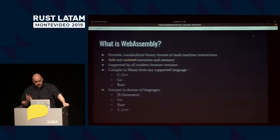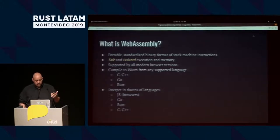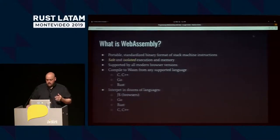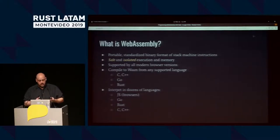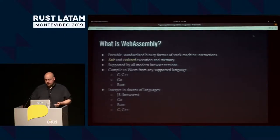You can compile to WebAssembly from any of the supported languages. When I started writing the WebAssembly book, that was essentially two languages: Rust and C or C++. Now you can do C, C++, Rust, Go. You can also, for whatever reason, compile JavaScript into WebAssembly. You can then interpret WebAssembly in dozens of different languages. The more important part is that while we assume WebAssembly has a runtime like the browser or the V8 engine, that's just one of many possible runtimes. Go can host and run WebAssembly modules, so can Rust, so can C.